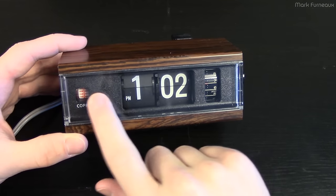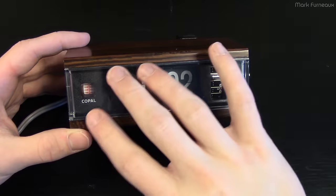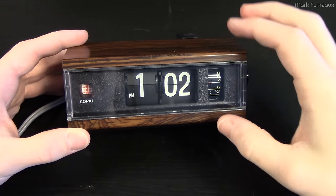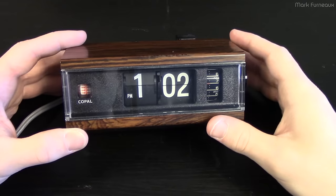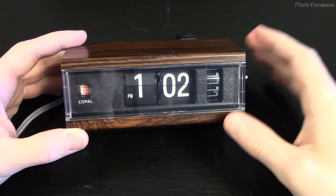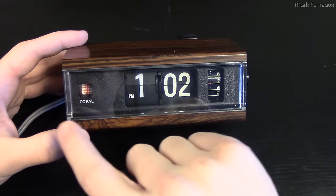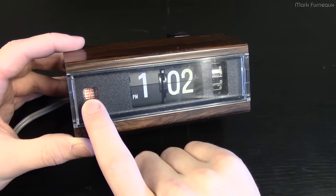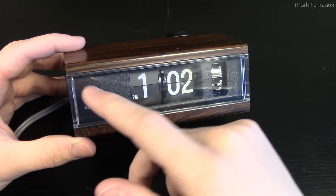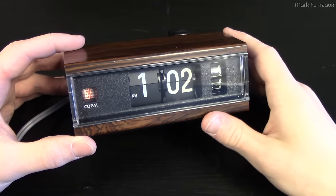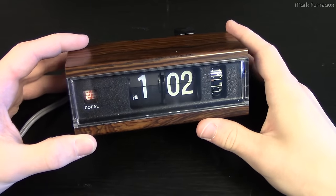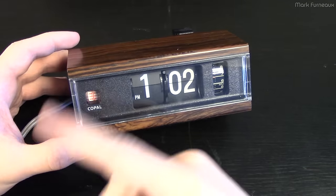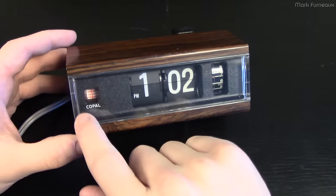And Copal, if you're not familiar with this company, they're a Japanese company and they made a lot of these flip clock mechanisms. In fact, a lot of the Japanese manufacturers of clock radios didn't make the mechanisms themselves. They bought them from Copal. So if you have a Panasonic flip clock, chances are it's got a Copal mechanism in it. One easy way to tell is the motor has this symbol on it. When I take this apart we'll see this symbol wrapped around the motor.